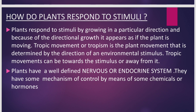How do plants respond to stimuli? Plants respond to stimuli by growing in a particular direction, and because of the directional growth it appears as if the plant is moving. Tropic movements or tropism is the plant's movement that is determined by the direction of an environmental stimulus. Tropic movements can be towards the stimulus or away from the stimulus. Plants have some mechanism of control by means of chemicals or hormones.